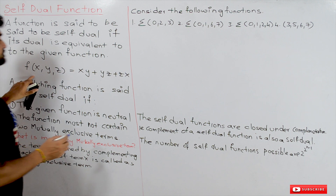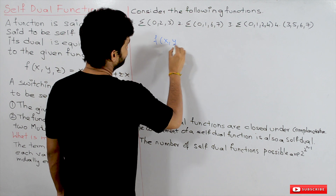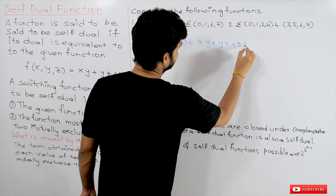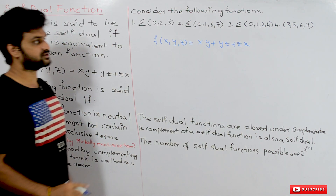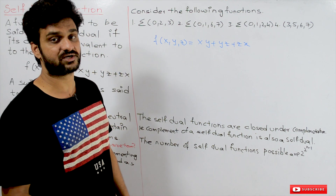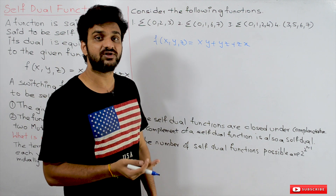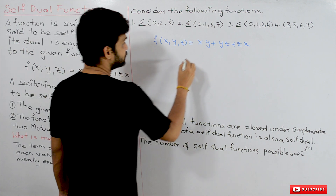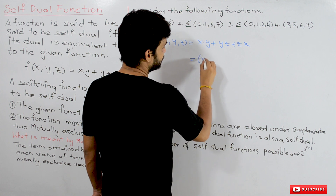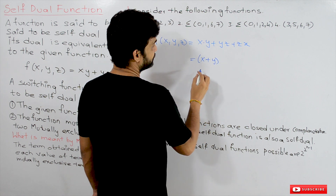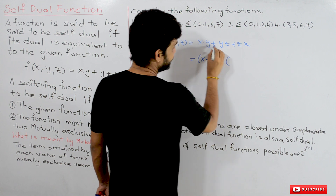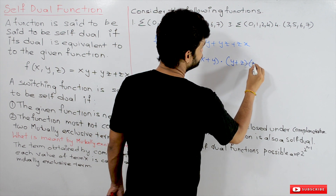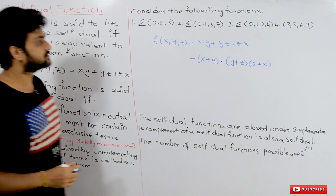Given this function f(x, y, z) = xy + yz + zx, is this function self-dual or not? In order to determine that, we have to find the dual of the function. The AND gate operation gets converted into OR gate, and the OR gate gets converted into AND gate. This gives us the dual of the above function.